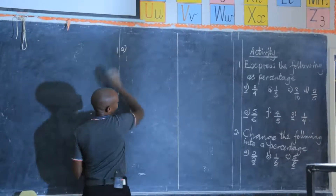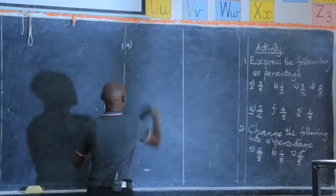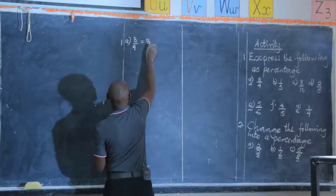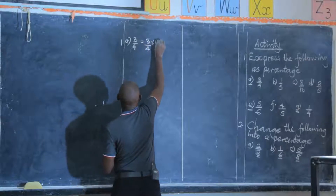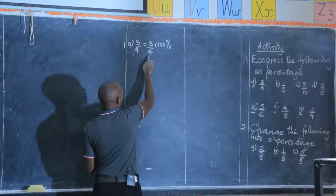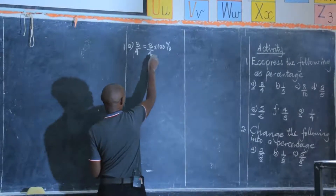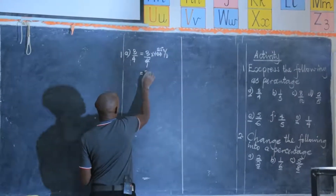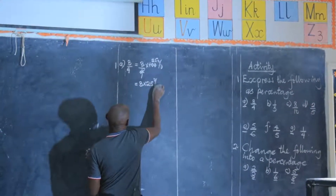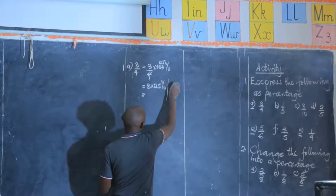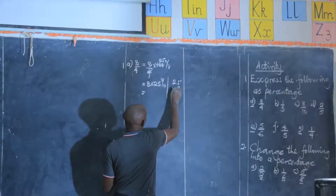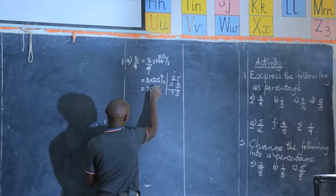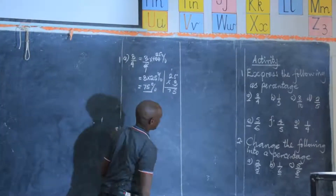Number one (a): you are supposed to express three-quarters into a percentage. So this is 3/4 multiplied by 100%. 100 divided by 4 is 25, so we shall have 3 times 25 percent. Arrange vertically and multiply: 25 times 3 — 5 times 3 is 15, carry 1, that is 6, 7 — so we get 75 percent. I hope you got it.